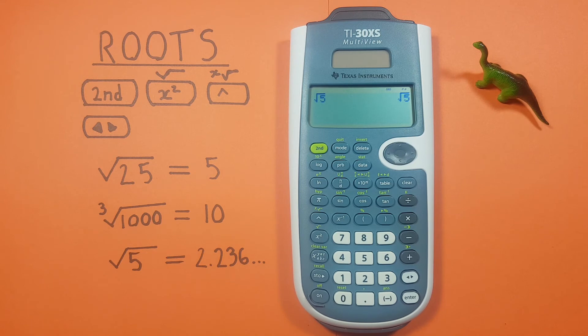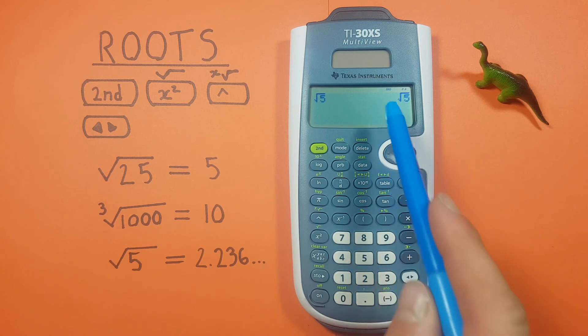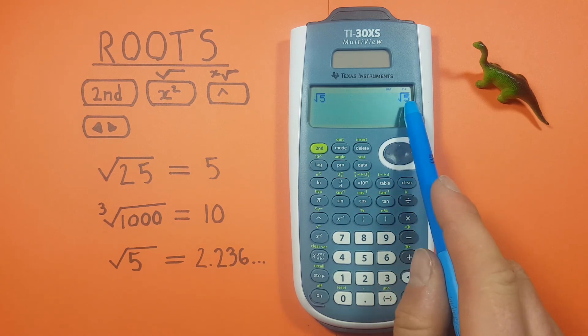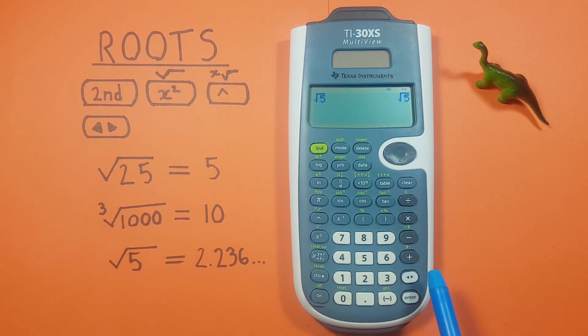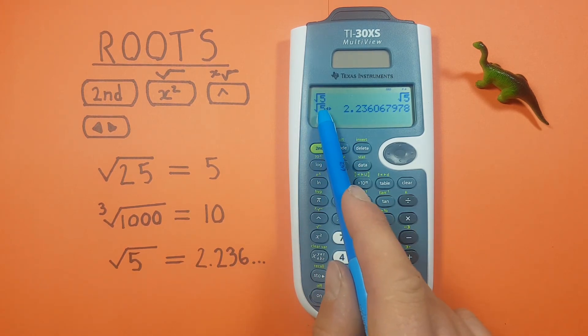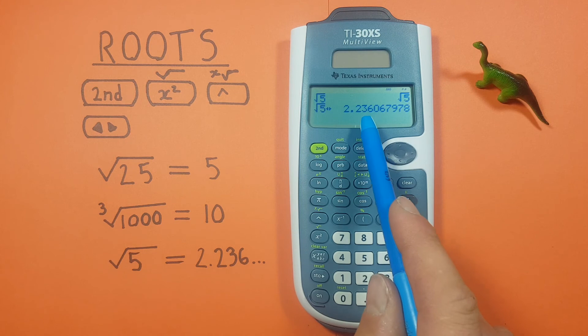Well if you want the decimal that doesn't really help us, that's where we can use the toggle key. That's this one here located here. So if we've got that square root of 5 on this side of the screen and we just press the toggle key, we see it converts square root of 5 to the decimal which in this case is 2.236 etc.